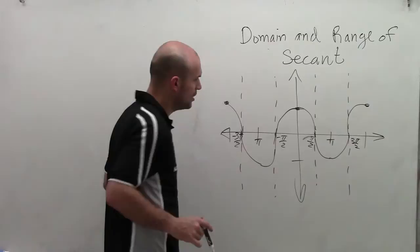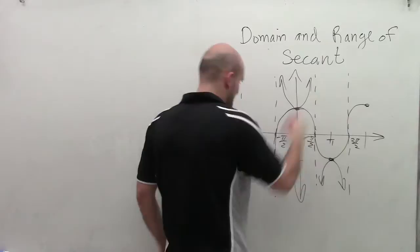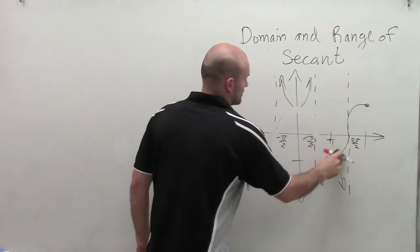So then, our graph approaches all of our asymptotes as the graph continues infinitely to the positive and negative direction.